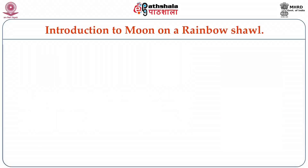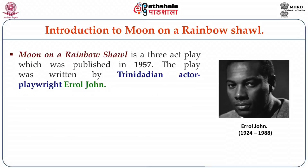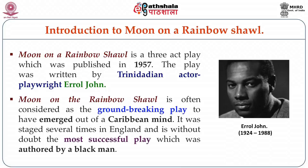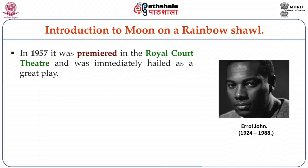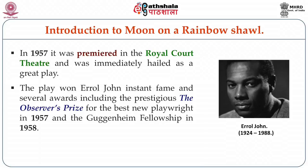Introduction to Moon on a Rainbow Shawl. This is a three-act play which was published in 1957, written by Trinidadian actor-playwright Errol John. It is often considered a ground-breaking play to have emerged out of the Caribbean mind. It was staged several times in England and is without doubt the most successful play authored by a black man. In 1957, it was premiered at the Royal Court Theatre and immediately hailed as a great play. The play won Errol John instant fame and several awards including the prestigious Observer's Prize for the Best New Playwright in 1957.